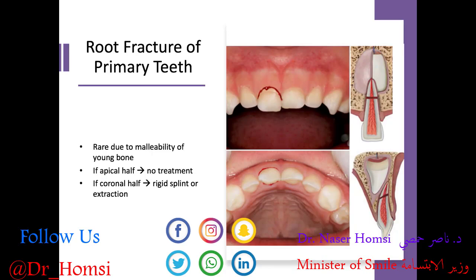Root fracture of the primary tooth is actually pretty rare due to the malleability of bone in young patients — it's more likely we'll see a crown fracture. If we do have a root fracture in the apical half, we recommend no treatment and let that root tip resorb physiologically as the permanent tooth comes in. But if the fracture is in the coronal half of the root, we could consider a rigid splint to hold that coronal portion in place, or extract and maintain space depending on where the underlying permanent tooth is.